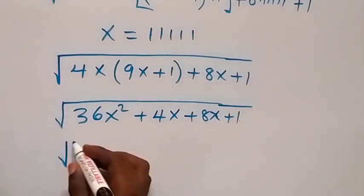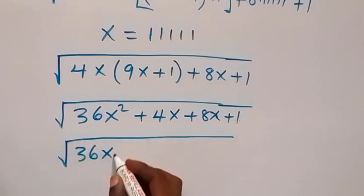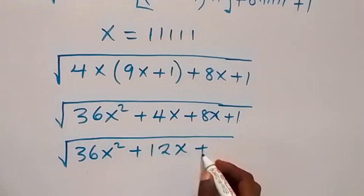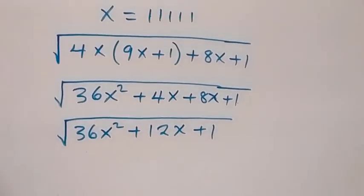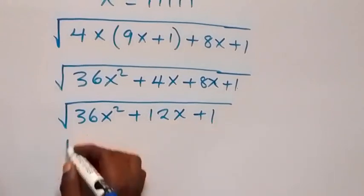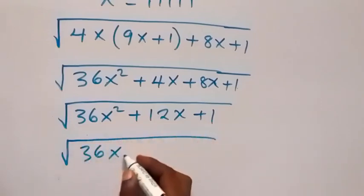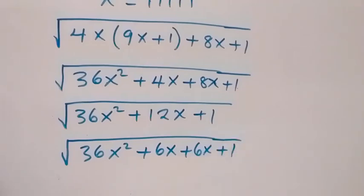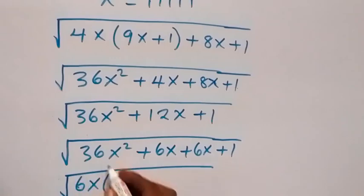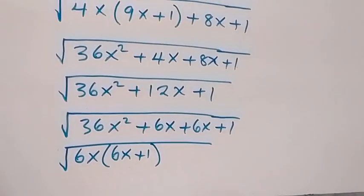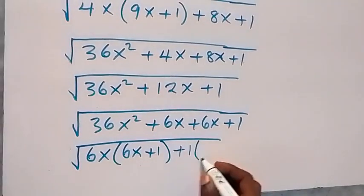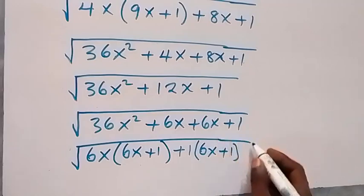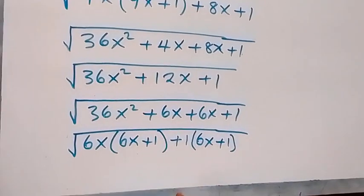So when we add 4x and 8x that gives us 12x. We can write it as square root of 36x² plus 12x plus 1. We can also split 12x as 6x plus 6x, giving us square root of 36x² plus 6x plus 6x plus 1. Factoring: 6x is common in the first two terms, leaving 6x plus 1, and 1 is common in the last two terms, leaving 6x plus 1.